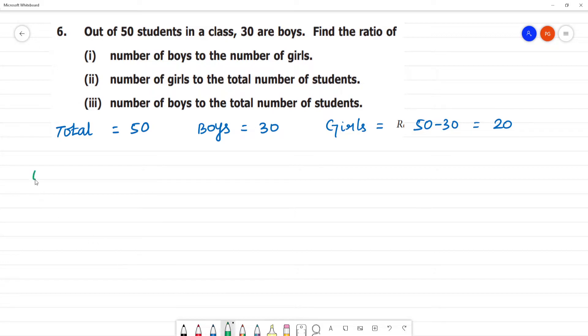Now, first one: number of boys to the number of girls. Boys to girls. What are we going to say? Boys: 30, is to girls: 20.